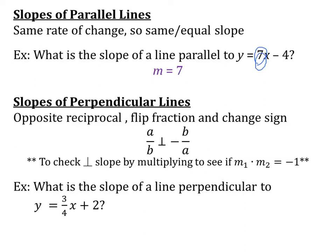Let's look at this example. What is the slope of a line perpendicular to y equals 3 fourths x plus 2? Well, the slope of this line is 3 fourths, so I need to do the opposite reciprocal. I'm going to flip my fraction so it becomes 4 over 3. And then since this slope is positive, I'm going to make my slope negative. So our new slope is going to be negative 4 over 3.